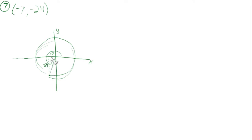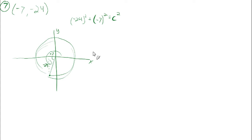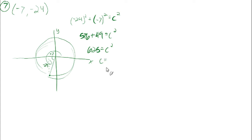We want to find the value of the radius. So negative 24 squared plus negative 7 squared equals C squared, or R squared. 24 squared is 576, and negative 7 squared is 49. Adding those together, we get 625 equals C squared, so C equals 25. That radius, that hypotenuse, is 25.